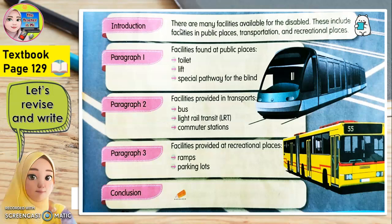Terdapat banyak kemudahan yang disediakan untuk orang kurang upaya. These include — termasuklah — facilities kemudahan in public places di kawasan awam, transportation pengangkutan, and recreational places dan kawasan rekreasi.